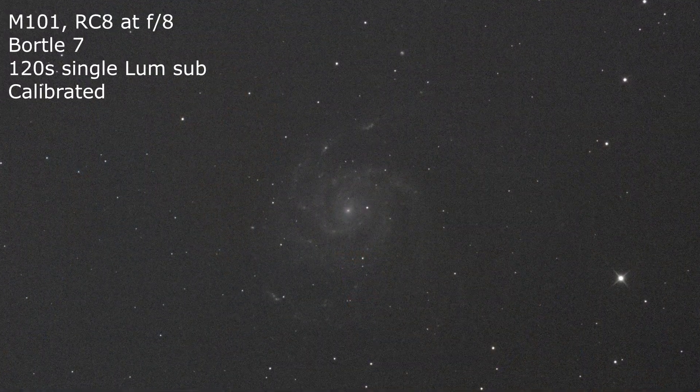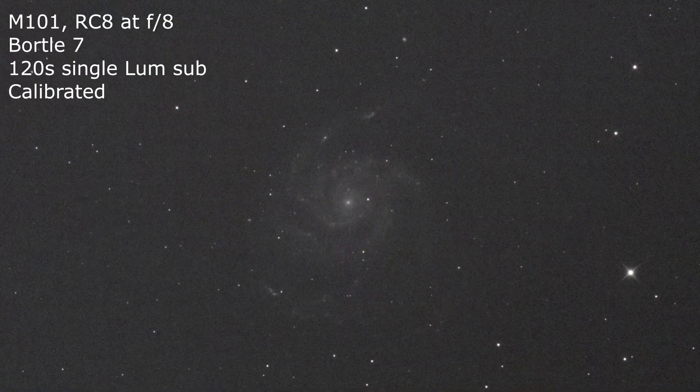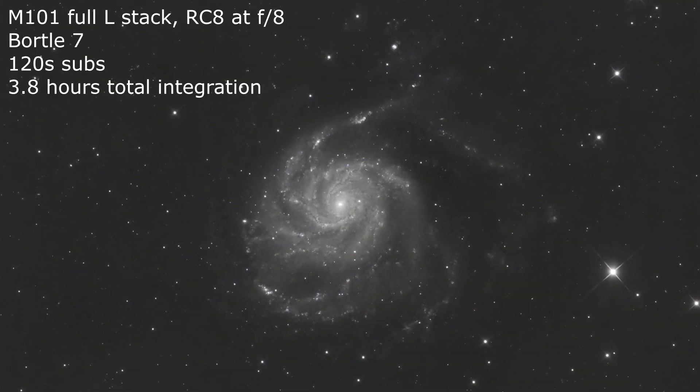It's really easy to expose for too long in heavy light pollution because it can blow out the background and completely wash out the target. So it's best to find a sub exposure length that gives you a decent signal-to-noise ratio while minimizing background brightness. As an example, I'll go back to my Edge 8 at F7, or even my RC8 at F8. I find that 120 second exposures work great for LRGB imaging.